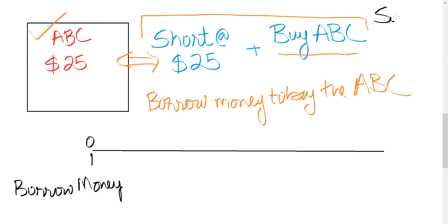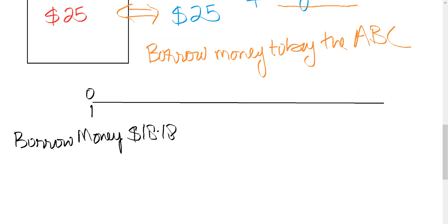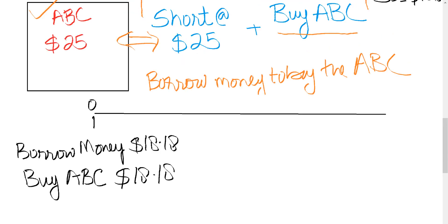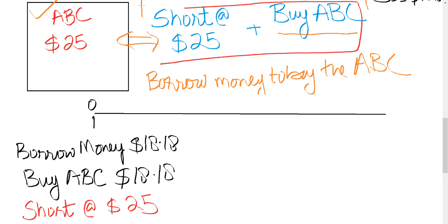At the start of the contract at time zero, the investor will borrow money. The current price of the underlying is $18.18, so the investor will borrow $18.18 and from that borrowed money will buy the ABC underlying asset at the market price of $18.18. To execute this strategy, the investor at time zero will also take a short position in this mispriced contract — short at $25. So the investor forms this portfolio at the start of the contract by borrowing money, buying the ABC share, and taking a short position in the mispriced forward contract.